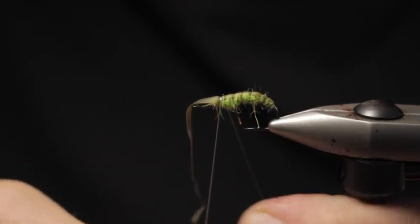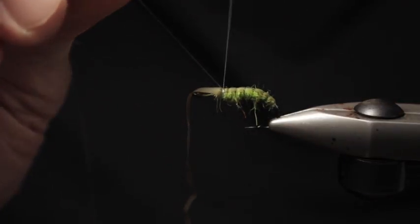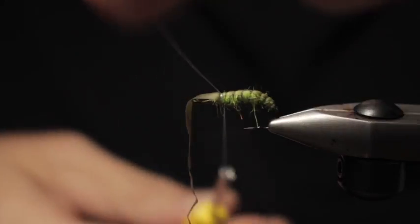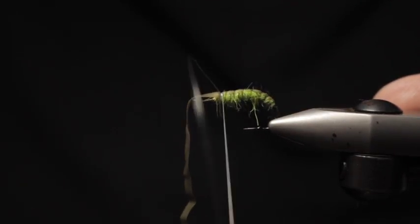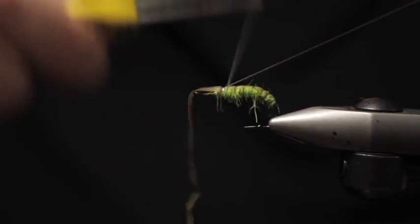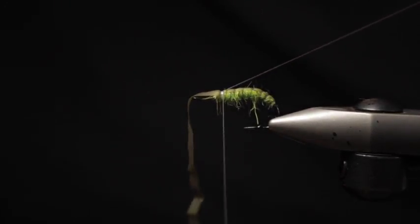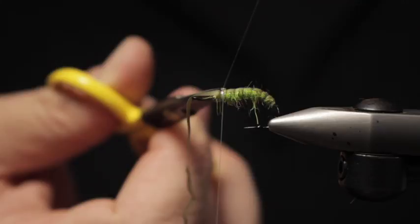Remember to increase your ribbing as you move forward, because as you get towards the thorax of the bug, you will have a little bit progress or larger body segments. It doesn't make a huge difference. I mean, at the end of the day, these fish probably have three seconds to decide to eat this or not.